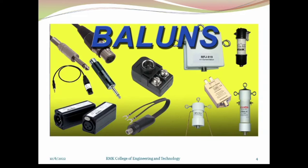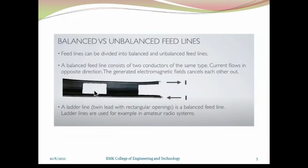See the pictures here — we have a lot of devices. These devices are going to match the impedance. These are called baluns: B-A-L, balance; U-N, unbalance — so balance-to-unbalance. These are the devices used to match the impedance when we join two systems together.